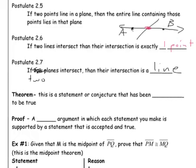Alright, a theorem. This is a statement or conjecture that has been proven to be true. Okay? So we have to prove these things true. We're going to prove some theorems in the next couple lessons.